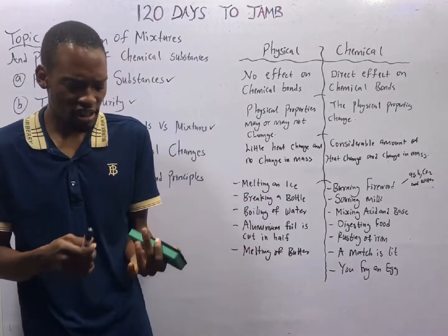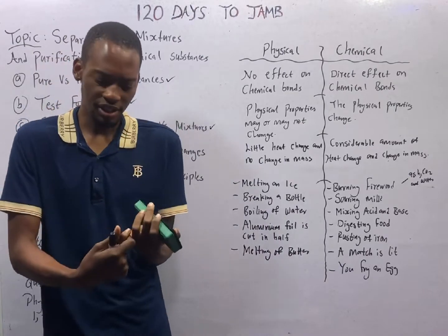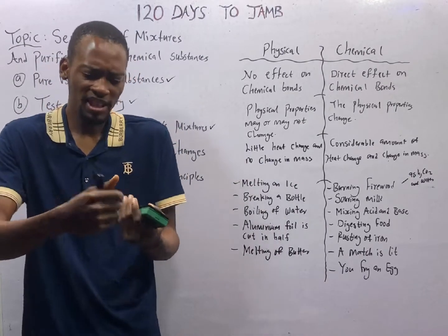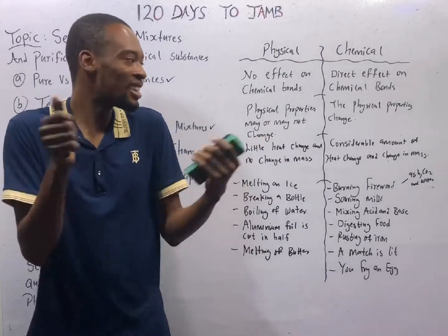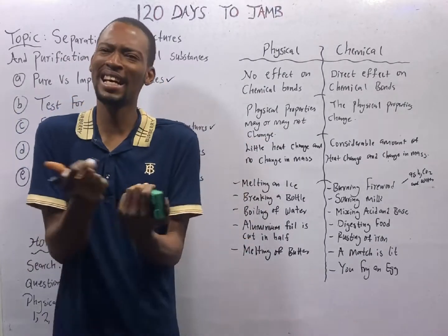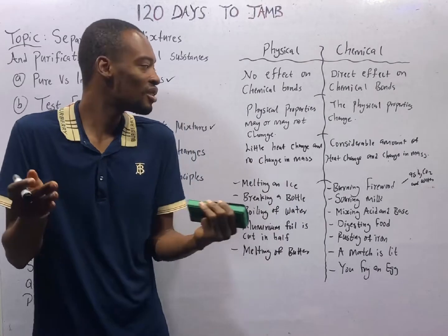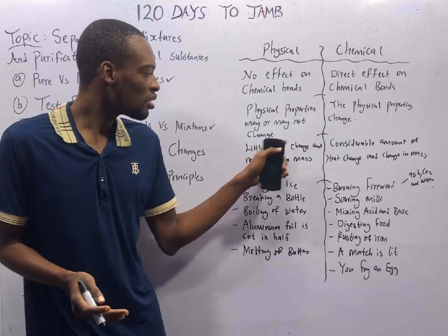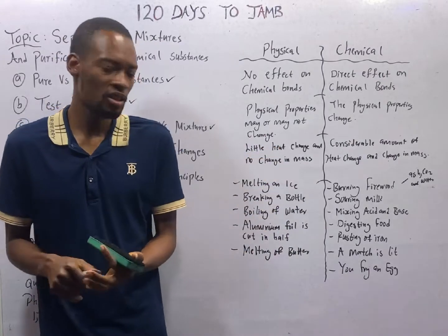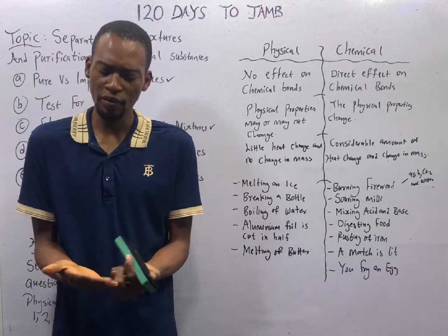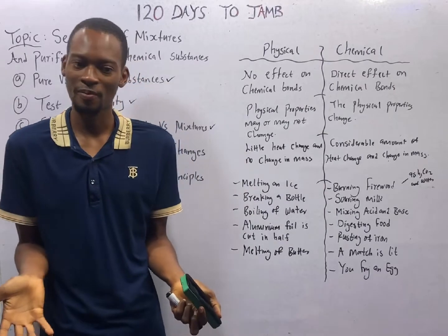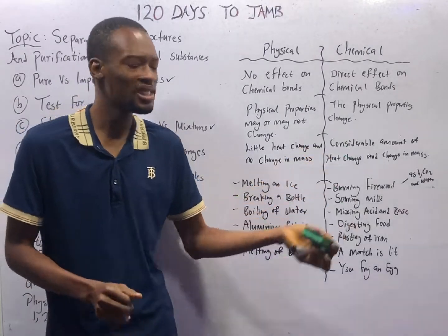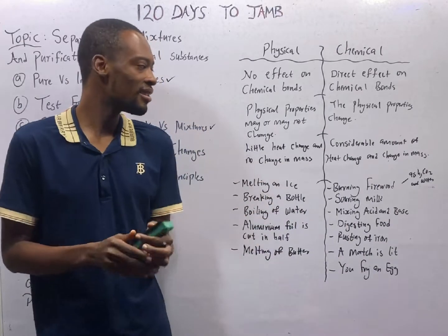For physical changes, there is little heat change and no change in mass. For chemical changes, since it involves energy — heat, light, sound, or bubbles — a large amount of heat is required for the change to occur, and there is a change in mass. When you cut wood into smaller parts or freeze water, the mass remains the same. But for chemical changes, the mass is different.